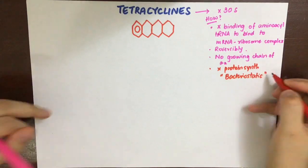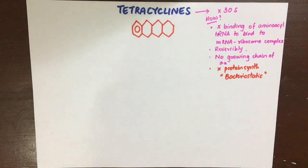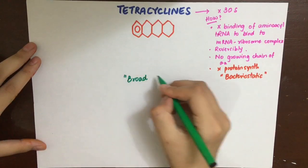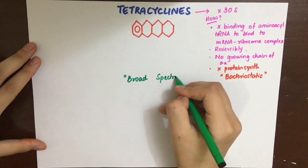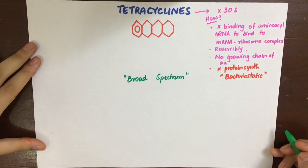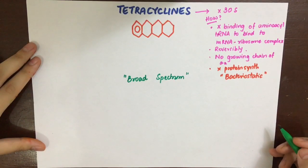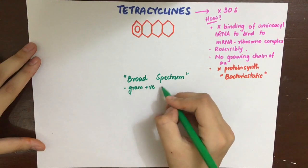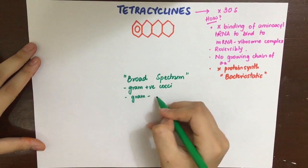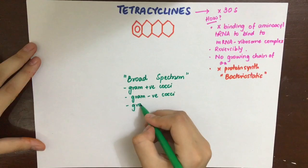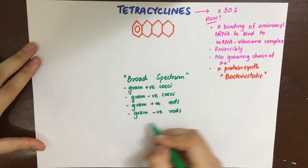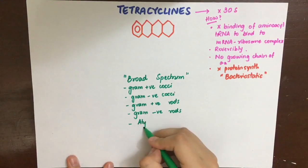Tetracyclines have a very broad spectrum of activity. Their activity includes gram-positive cocci such as Staph aureus and Strep pneumoniae, gram-negative cocci such as gonococcus, gram-negative rods such as Vibrio cholerae, H. influenzae, H. pylori, and Yersinia pestis, gram-positive rods like anthrax, and atypical bacteria such as Rickettsia, Mycoplasma, Chlamydia, spirochetes, and actinomycetes.